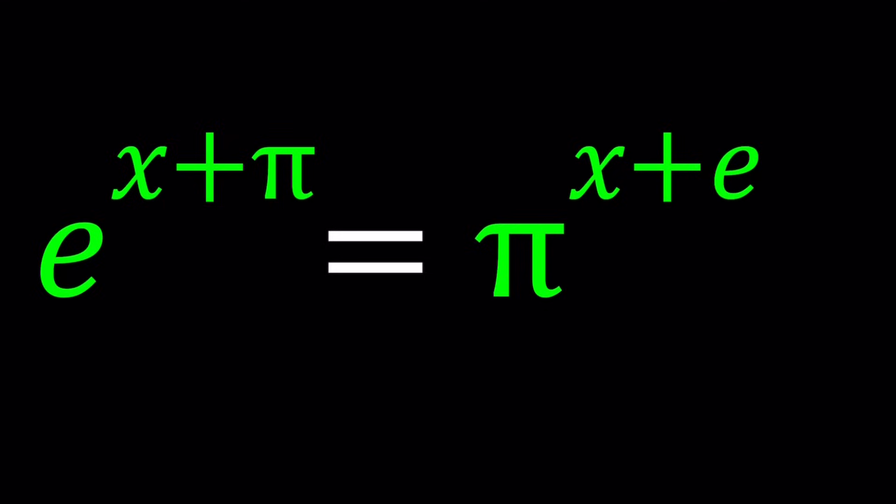We have e to the power x plus pi equals pi to the power x plus e. And we are going to solve for x because e and pi are constants. E is Euler's number, about 2.7. And pi is about 3.14.